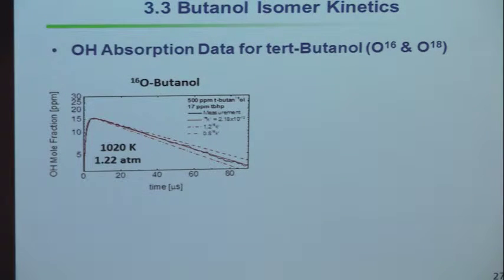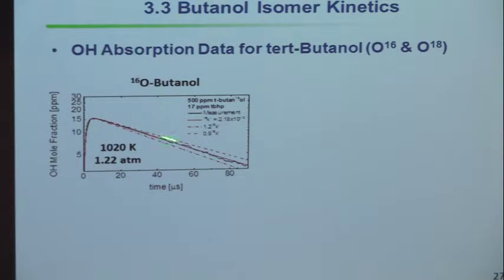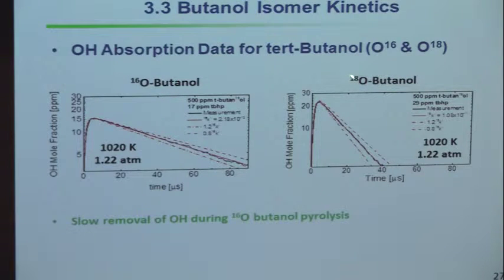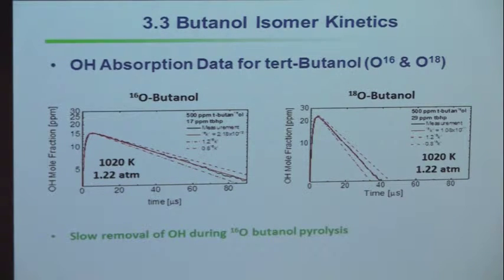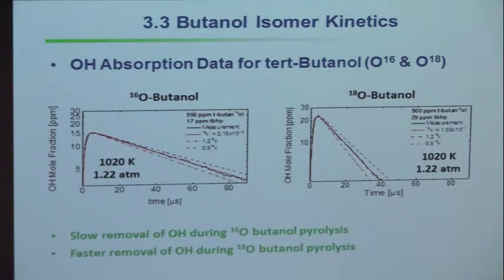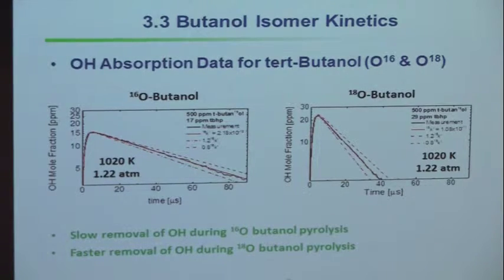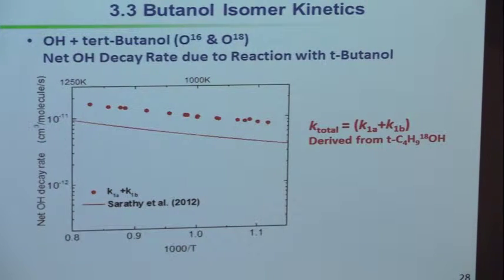We measure the time history. With the oxygen-16 case, we fit the decay and get the rate coefficient — but it's a slow removal. With the oxygen-18 labeled fuel, that channel does not replace the OH-16 we're removing, so it goes away faster. The slow rate is the net rate including OH reformation; the faster rate is the actual reaction rate we care about. If you interpret the slow decay as the rate coefficient, you're wrong. By using two isotopes and a diagnostic centered only on one, you can figure this out and sort out the branching.